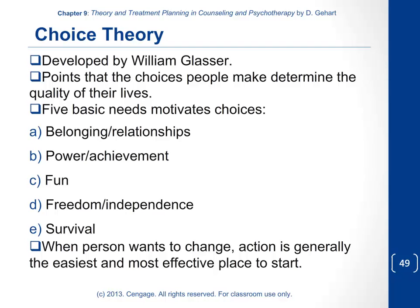Choice theory, developed by William Glasser, is not classically considered cognitive behavioral but is closely related in its interventions, though its theory is quite unique. It focuses on the fact that the choices people make determine the quality of their lives. Glasser identifies five basic needs that motivate these choices: belonging and relationships, the need for power and achievement, and the need for fun.